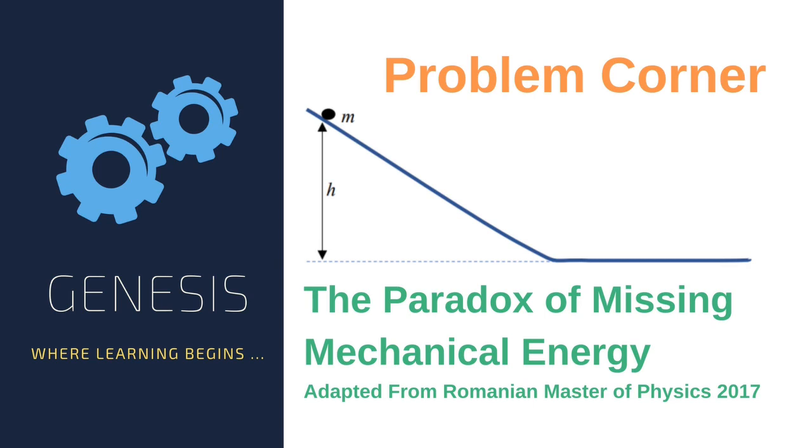Hi there, you're watching the Genesis YouTube channel. Today we'll be doing a question adapted from the Romanian Master of Physics 2017 competition. The question is an apparent paradox in which it appears that mechanical energy has gone missing.